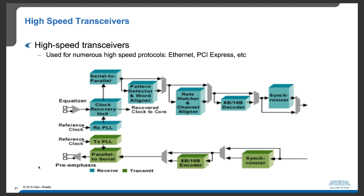High-speed transceivers are very useful for FPGAs to implement complex signal protocols to communicate with other devices. These protocols — for example, Ethernet and PCI Express — involve a large number of signals with well-defined timing sequences. To make it easier for FPGA developers to connect to these devices using standard protocols, FPGA vendors provide high-speed transceivers that can be easily programmed to support specific protocols, so the FPGA programmer does not have to deal with complex signal conditioning and processing.